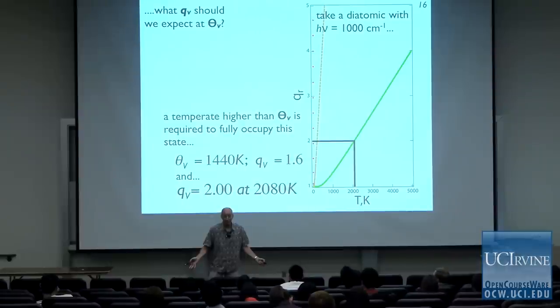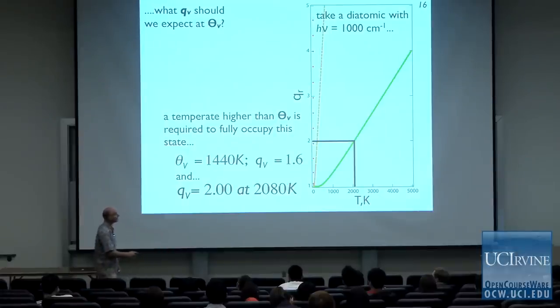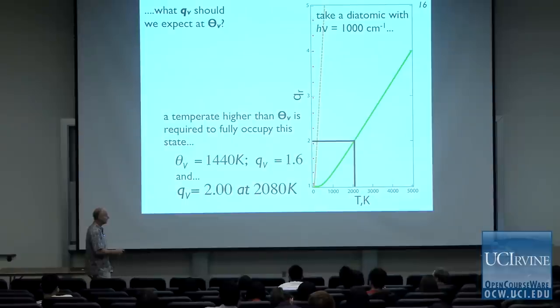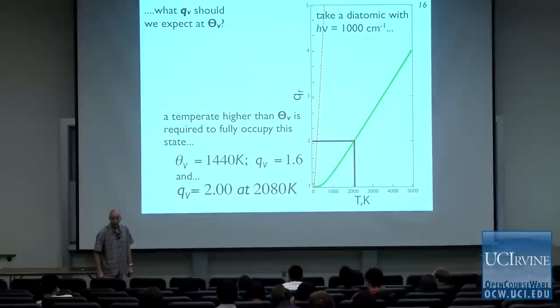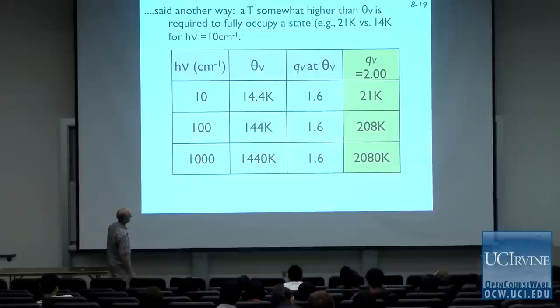So the intuition we want is: if the temperature equals the characteristic vibrational temperature, we expect the partition function to be about 1.5 to 1.6 — that's just the way the partition function works. It's counterintuitive: your intuition would tell you that at the characteristic vibrational temperature the first excited state should be fully accessible and the partition function should be 2, but that's not how it actually works. You have to go to a temperature higher than the characteristic vibrational temperature to reach Q = 2.